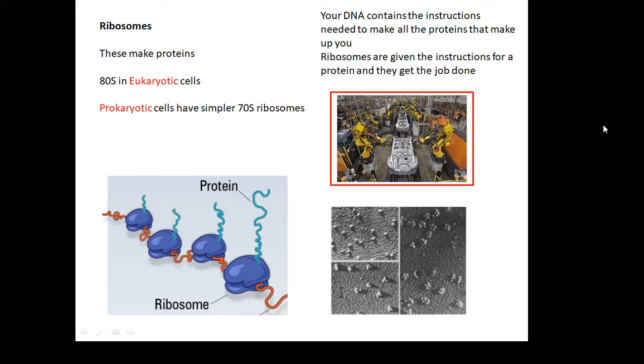Ribosomes make proteins. In a eukaryotic cell, such as an animal cell, ribosomes are called 80S. In a prokaryotic cell, we're going to talk about these in another video, the ribosomes are simpler. They're called 70S ribosomes.